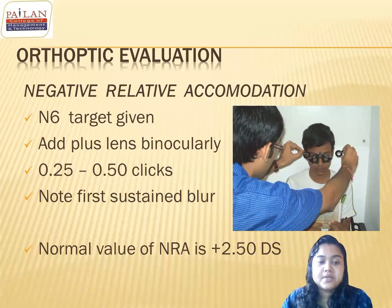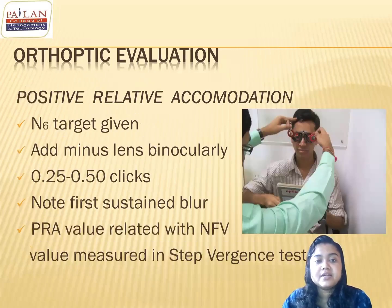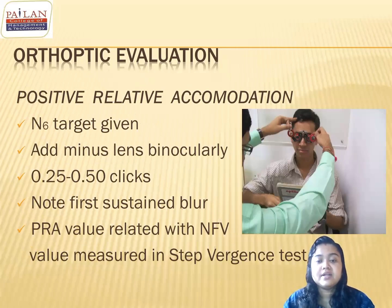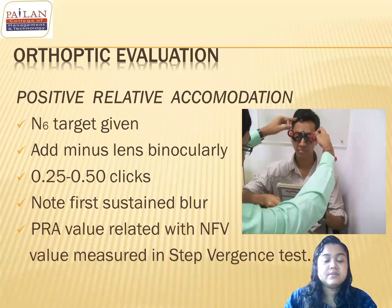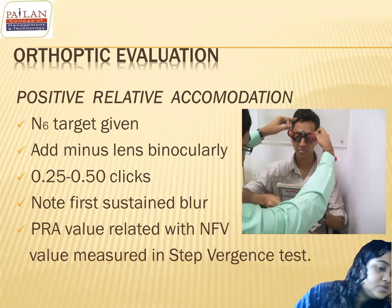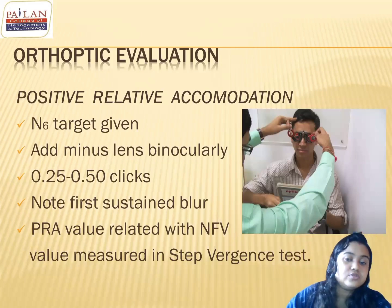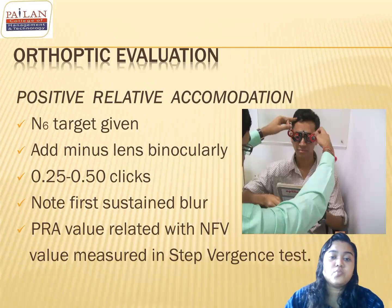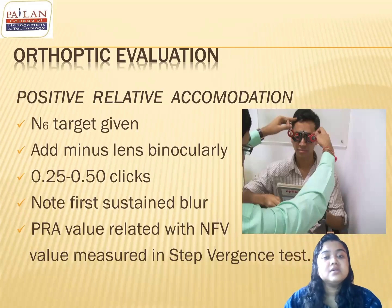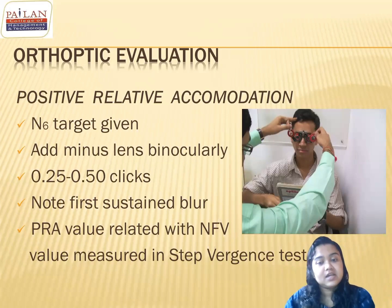By PRA test, what we are doing is we are stimulating the accommodation and measuring till how much accommodation can be stimulated. A normal person should have a PRA value of around minus 2.5 diopters, because he should be able to stimulate his accommodation like that.